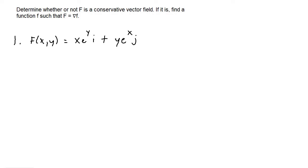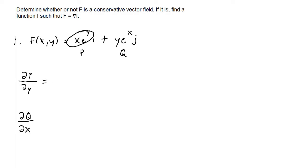For number one, f(x, y) equals x times e to the y times i, plus y times e to the x times j. So x times e to the y is p, and y times e to the x is q. To check, we take the partial derivative of p with respect to y, which gives x times e to the y, and the partial derivative of q with respect to x, which gives y times e to the x. These two are not equal to each other, so this vector field is not conservative.